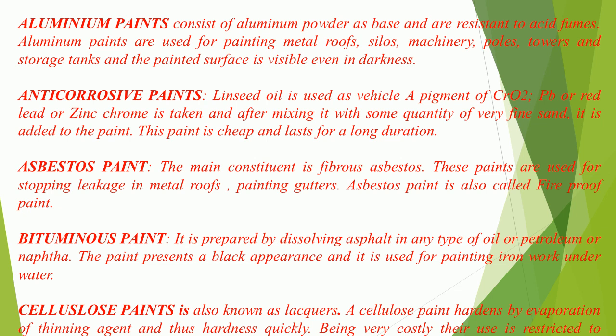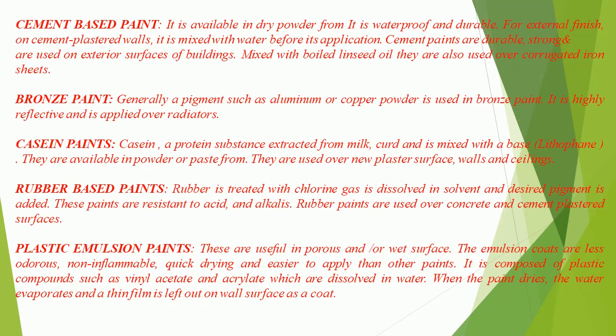Cellulose paints, also known as lacquers, harden by evaporation of the thinning agent and thus harden quickly. Being very costly, their use is restricted to painting cars, ships, and airplanes. Cement-based paint is available in dry powder form; it is waterproof and durable. For external finish on cement plastered walls, it is mixed with water before application. Cement paints are durable, strong, and are used on exterior surfaces of buildings. Mixed with boiled linseed oil, they are also used over corrugated iron sheets.